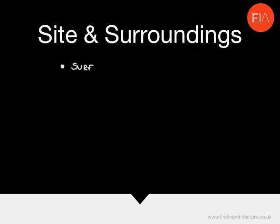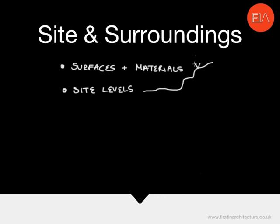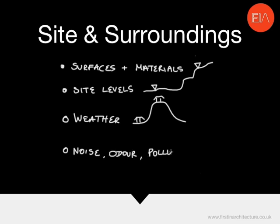Next, look at what sort of materials and surfaces there are around the site. Start thinking about the site levels — how will the levels affect your design process? How does the drainage work on the site, and will there be any potential problems with drainage? Consider weather: is the site well shaded or really exposed, and will this have a big sway on your design? And consider noise, odour, and pollution — is the site in a noisy area? Is it near industrial buildings that produce pollution or near a facility that creates a lot of smoke? All of these things you should be trying to take on board while on site and start thinking about how they'll affect your design.